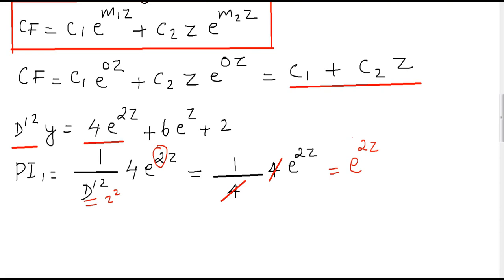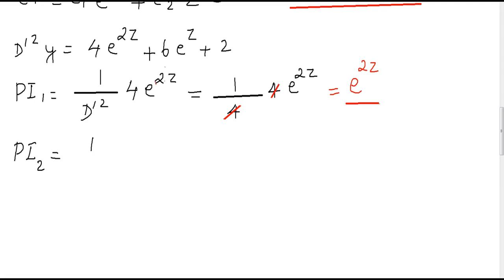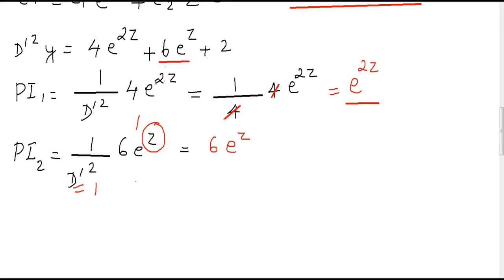PI₂ = (1/D'²) · 6eᶻ. The coefficient of z in eᶻ is 1, so we replace D'² with 1² = 1 in the denominator. Therefore PI₂ = 6eᶻ.